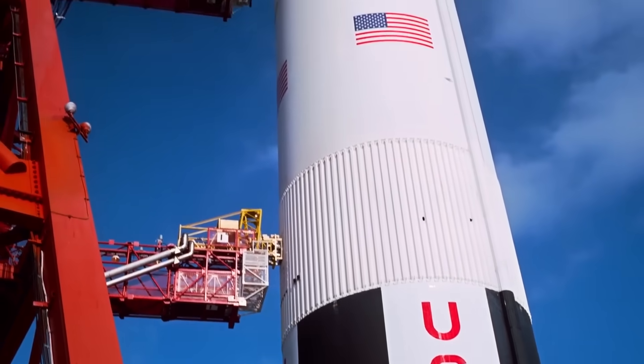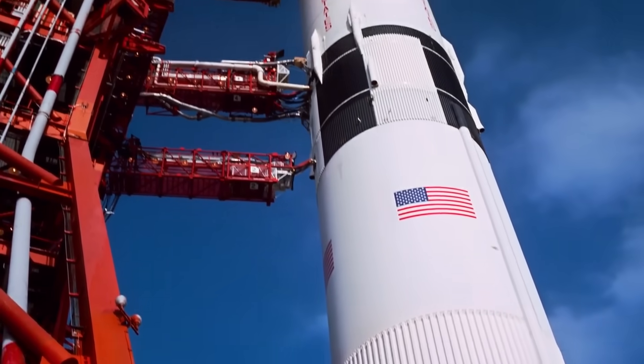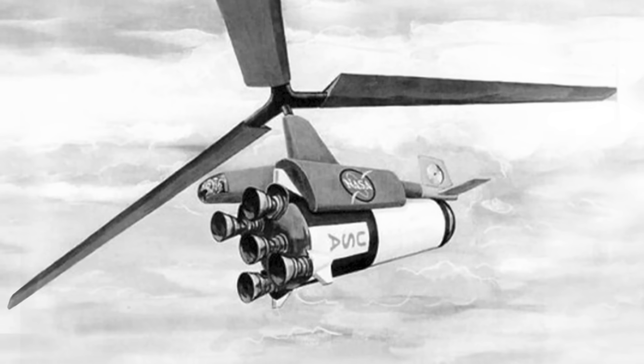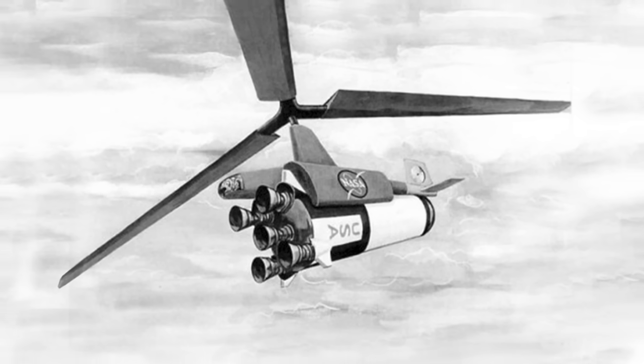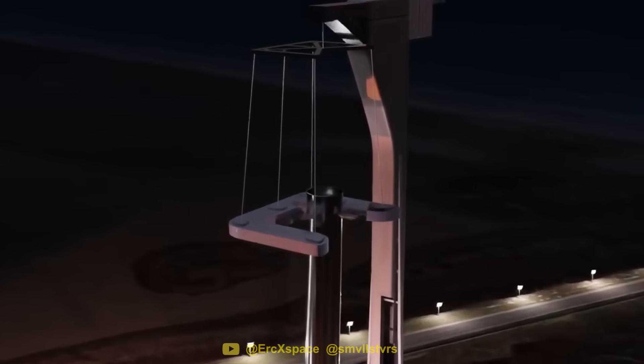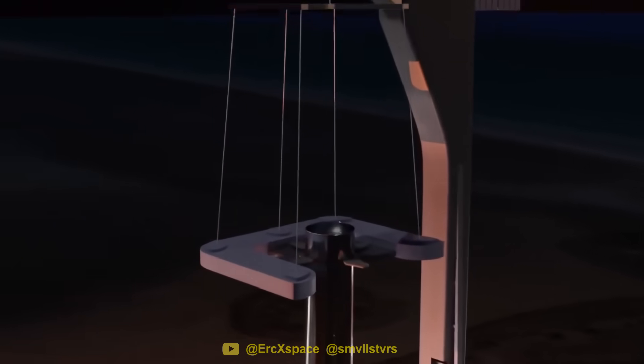Back in the 60s, NASA considered catching the enormous Saturn V first stage using a helicopter with rotor blades over 100 meters long. In comparison, SpaceX's idea sounds a little less crazy.